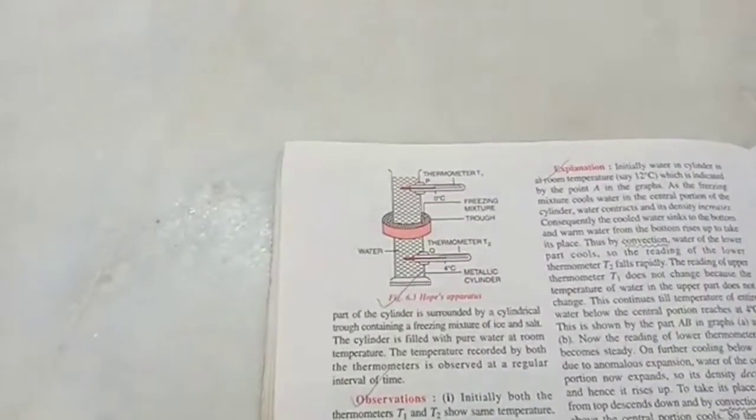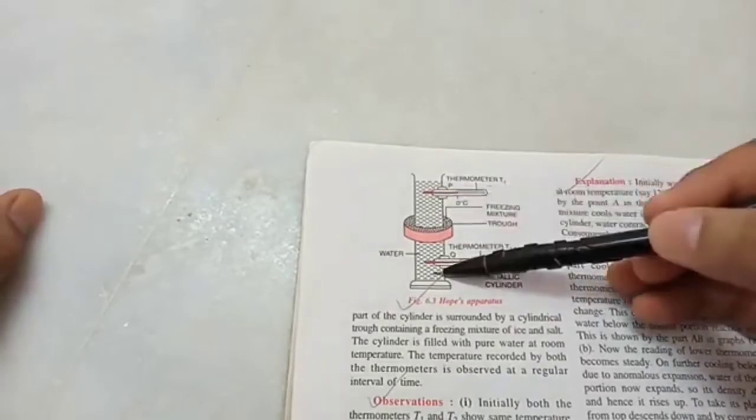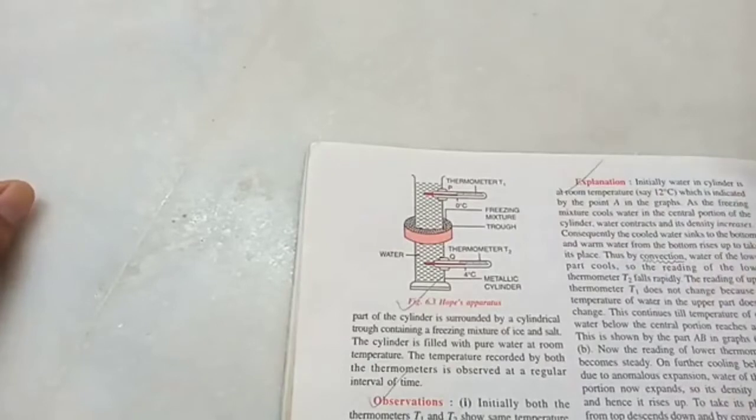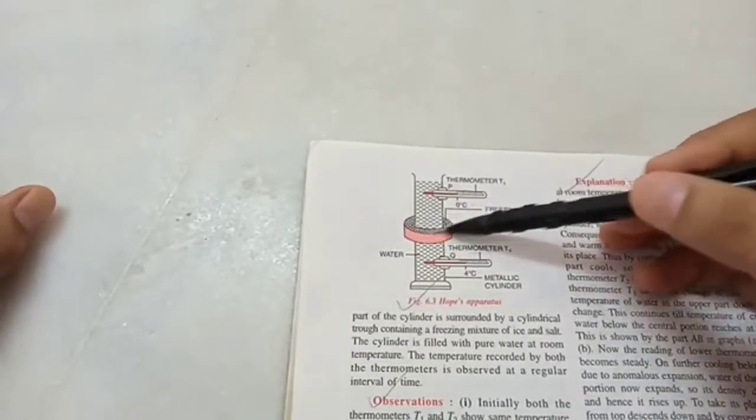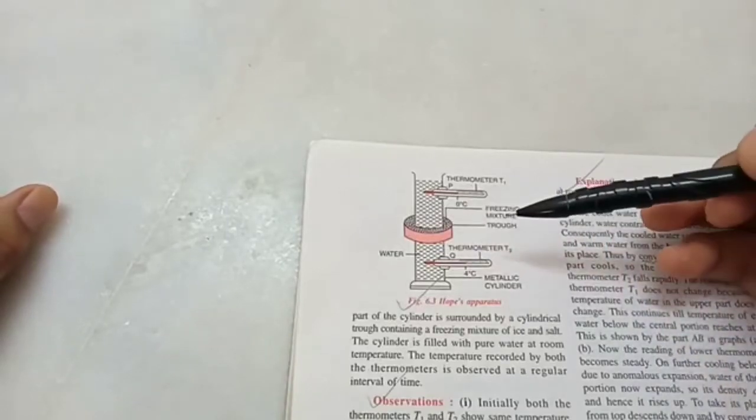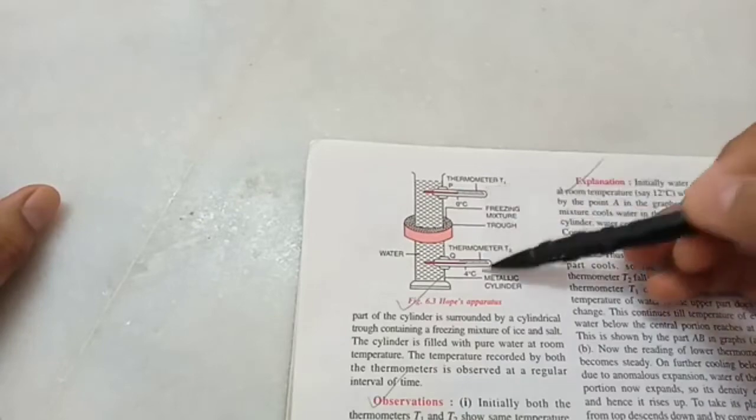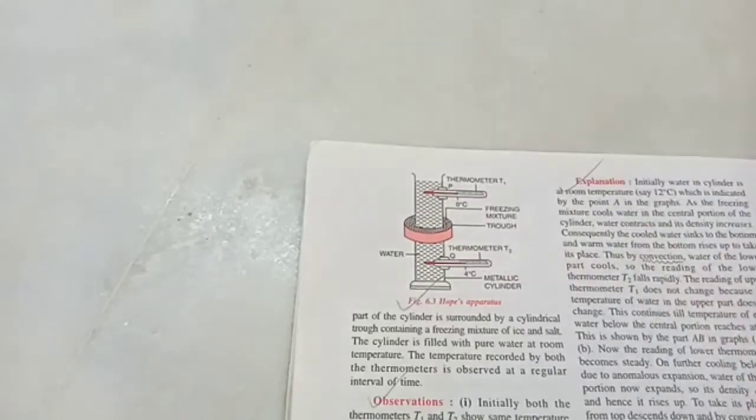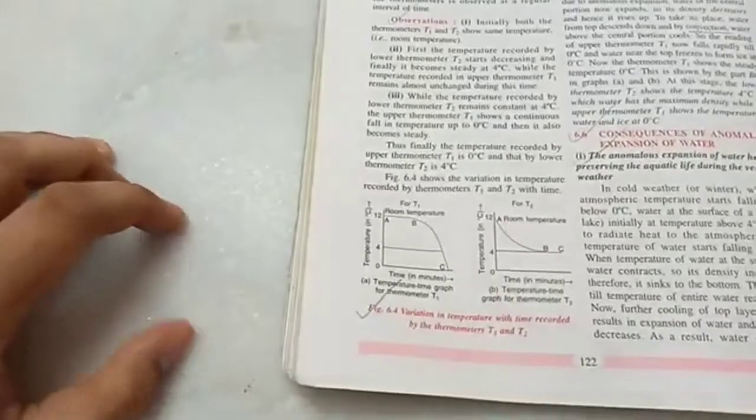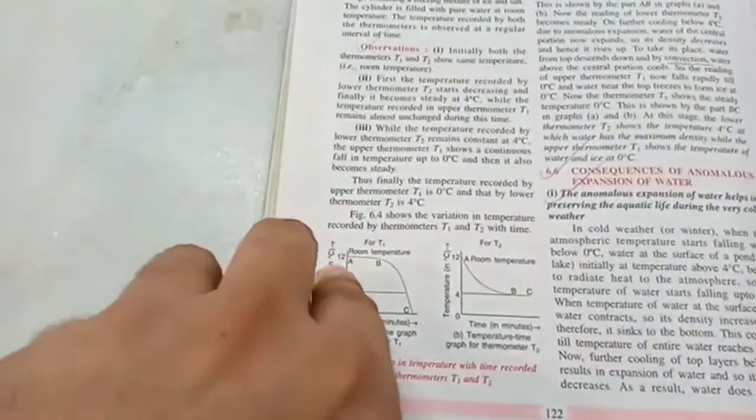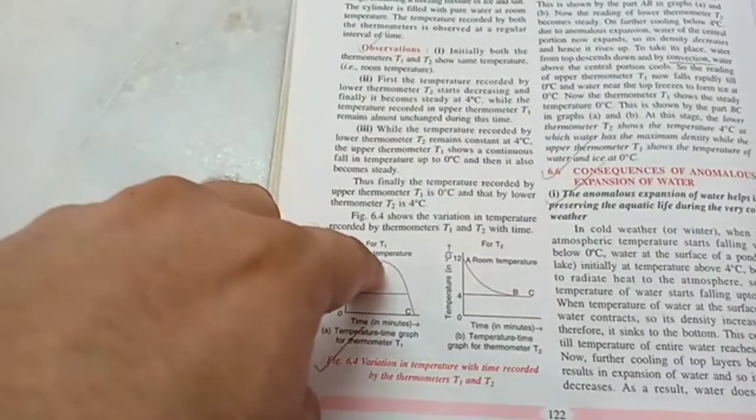Now this can be proved with the help of Hope's experiment. So here we have a setup. We have water and it is surrounded by a freezing mixture which keeps the temperature very low, around minus 20 degree Celsius. It's a mixture of ice and salt to cool the water inside the beaker. Let's say initially the water was at 12 degree Celsius. So we have thermometer 1 and thermometer 2. And we will observe the changes in the temperature and plot a graph.